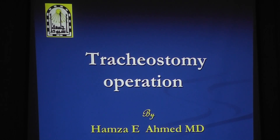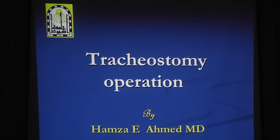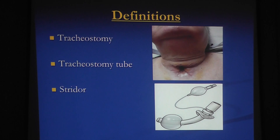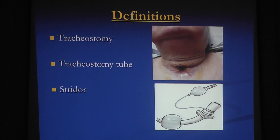Bismillah ar-Rahman ar-Rahim. This is my last lecture and it is about tracheostomy operation. Tracheostomy as an operation means creating an opening in front of the trachea for some purposes, usually for respiration. The tracheostomy tube is the tube which is put through this opening to maintain it and prevent its closure until the required time.